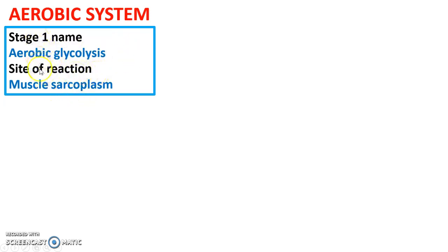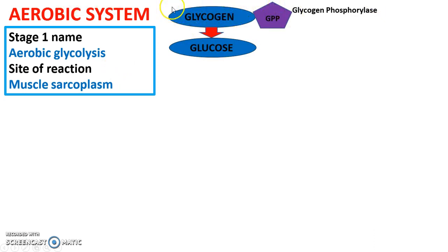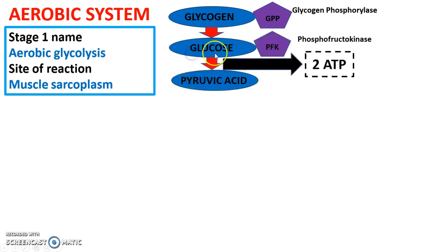The process will be familiar. Glycogen is broken down by the enzyme GPP into glucose — exactly the same as the glycolytic system. Then glucose is broken down by PFK into pyruvic acid, and as a result of this, two ATP are resynthesized. The stage name and site of reaction are important Cornell note questions as they're really tested in exams.